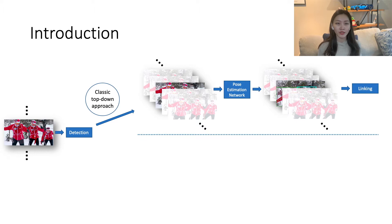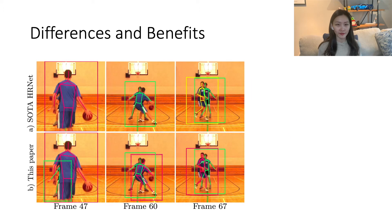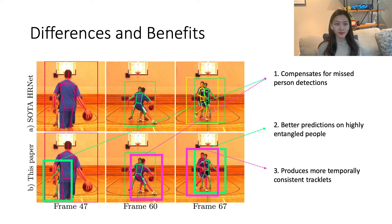In our work, we propose to overcome this limitation by propagating known person locations forward and backward in time and by searching for pulses in those regions. Our approach brings several benefits: first, it can localize commonly missed person detections; second, it can deal better with highly entangled people; third, it produces more temporally consistent tracklets.